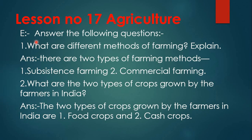Next, Section E: Answer the following questions. First question: what are the different methods of farming? Explain. There are two types of farming methods — one is subsistence farming and the second is commercial farming.